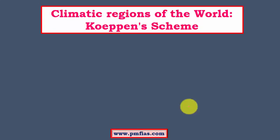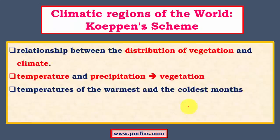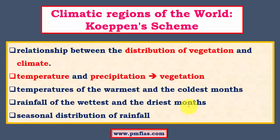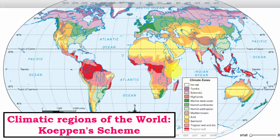Köppen's classification is a very practical approach where instead of relying on logic, he uses an empirical approach. He uses parameters like temperature and precipitation, the obvious ones, and based on that he determines what kind of vegetation exists. Based on temperature, precipitation, and vegetation of a region, he has classified the world's climates into different regions.